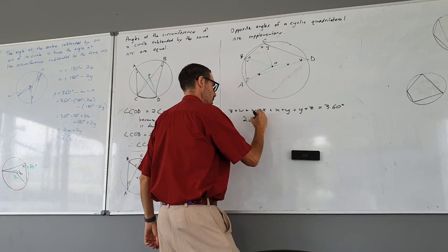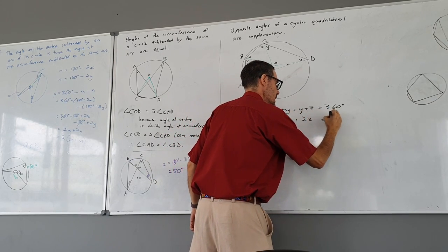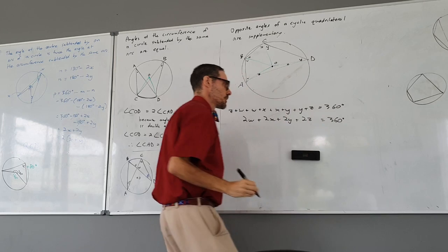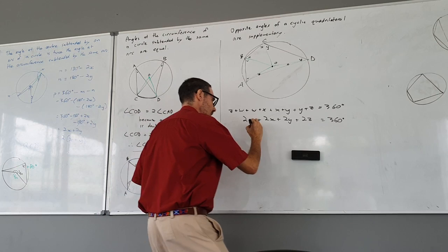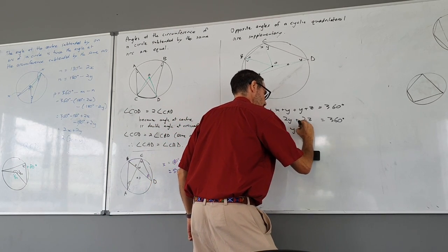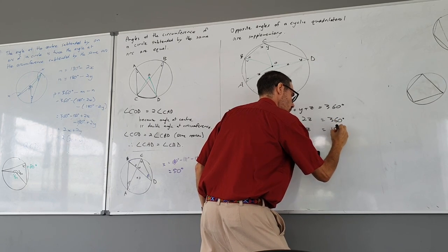Two W plus two W plus two X plus two Y plus two Z is 360. That means they must all add up singly: W plus X plus Y plus Z must add up to 180.